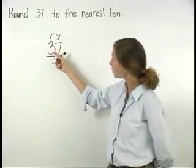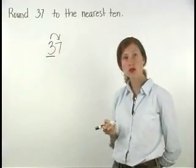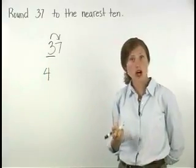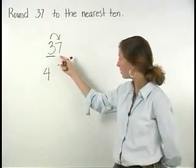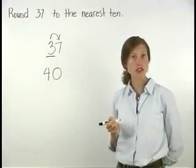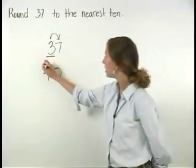This means we add 1 to the digit in the rounding place, so 3 becomes 4. And we change all digits to the right of the rounding place to 0. So 37 rounded to the nearest 10 is 40.